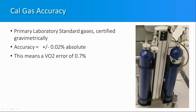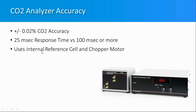The CO2 system that comes with the Moxis is top of its class. It is the only system that uses a reference cell — a sample of actual CO2 at a known value — and uses a chopper motor to switch between the reference cell and the incoming sample. This makes it a very self-calibrating system operating many times per second. The response time for this system is also very fast.